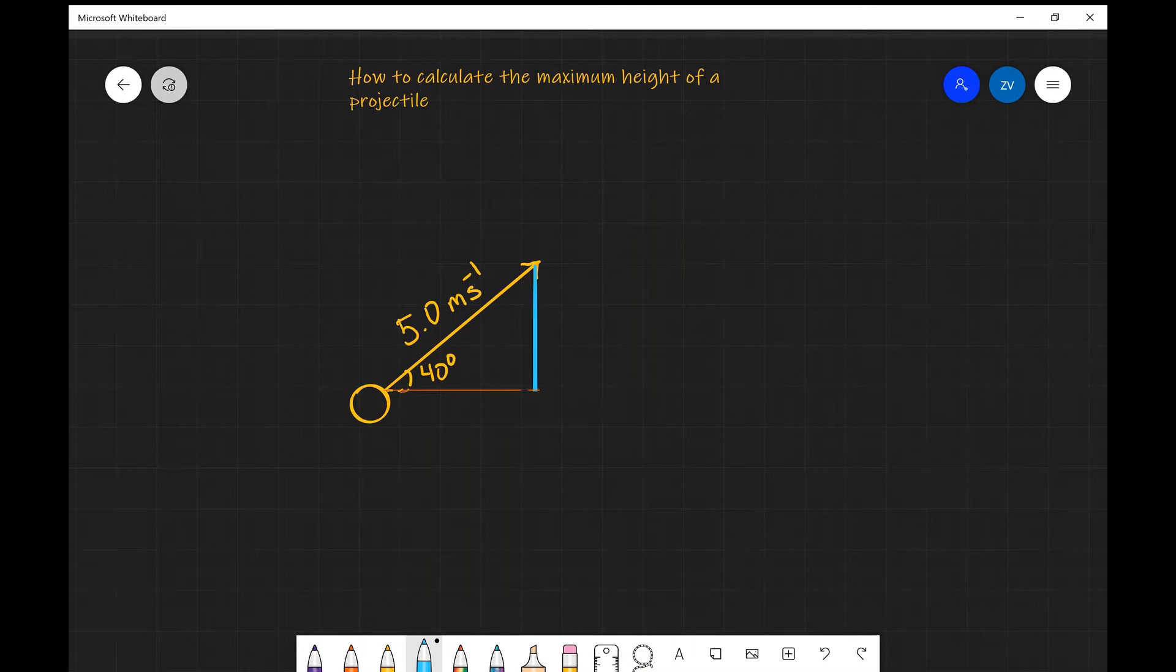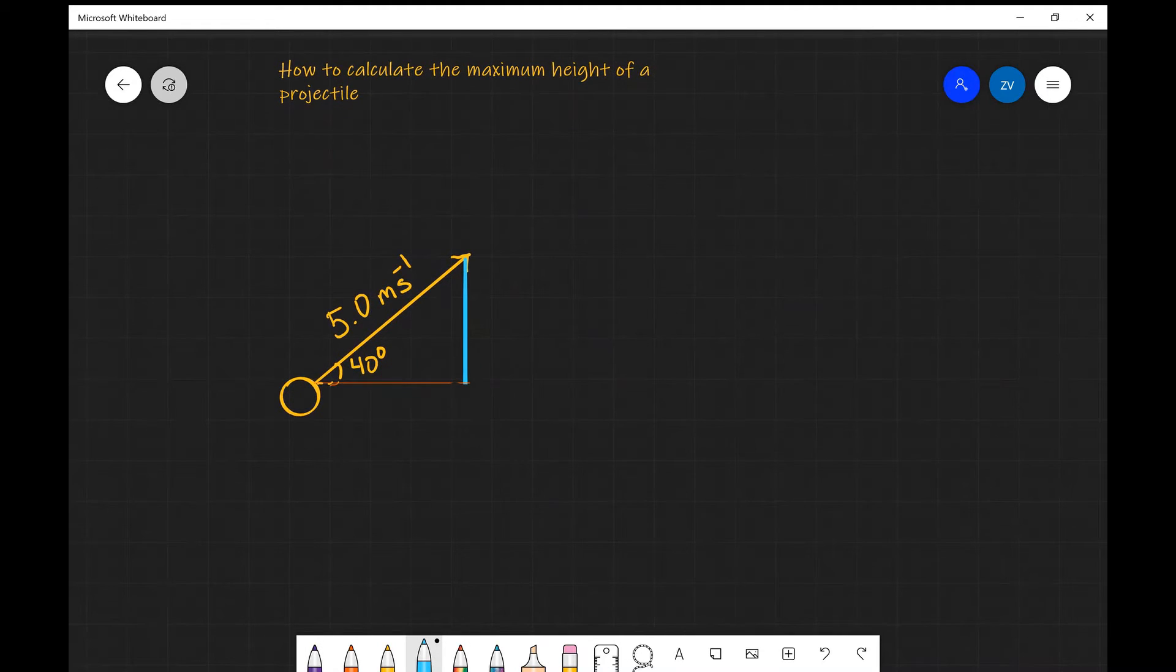Okay guys, now what if I was to fire the same projectile at 5 meters per second, however now angled at 40 degrees? How would that impact the maximum height of the projectile?